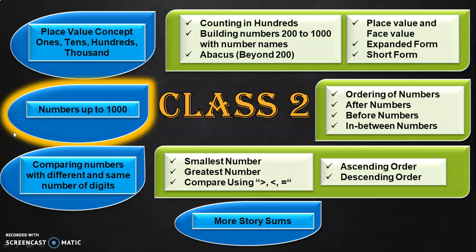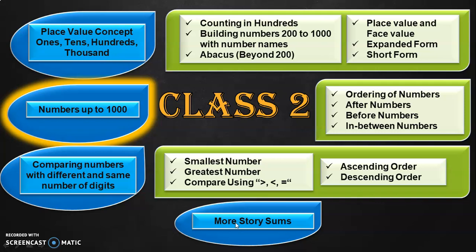Dear viewers, if this is your first time here, let me give you a quick update on what are all the learning outcomes in Class 2 under the concept numbers. Place value concept is one of the learning outcomes, in which we'll be seeing about the ones, tens, hundreds and thousands. Number activities on numbers up to thousand is another learning outcome. Comparing numbers and doing problem sums are some of the learning outcomes under the number concepts in Class 2.